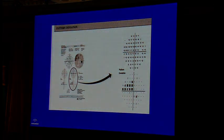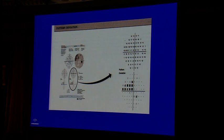The pattern deviation addresses a limitation of total deviation: conditions like cataract or miosis cause a diffuse depression of the entire field, which can mask a localized defect such as a paracentral scotoma or nasal step due to glaucoma. The pattern deviation removes the overall diffuse depression so that any localized field loss due to glaucoma becomes apparent.